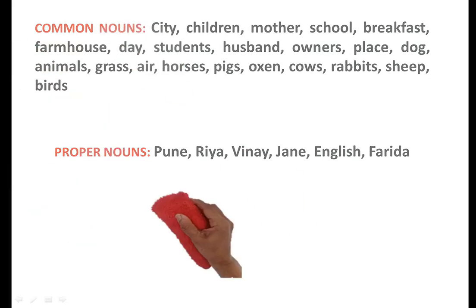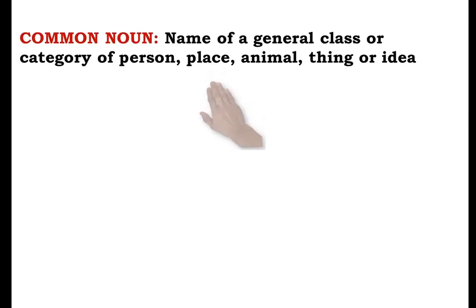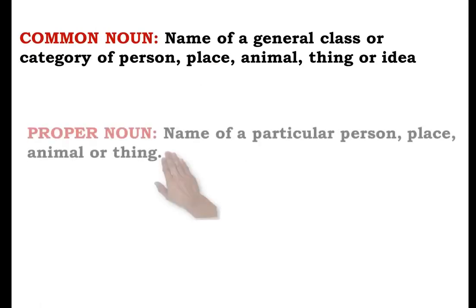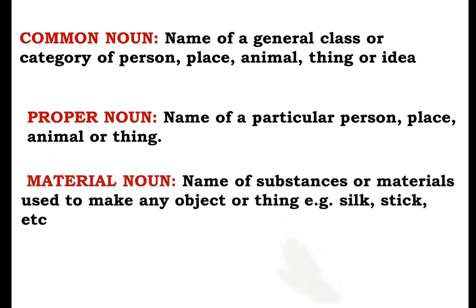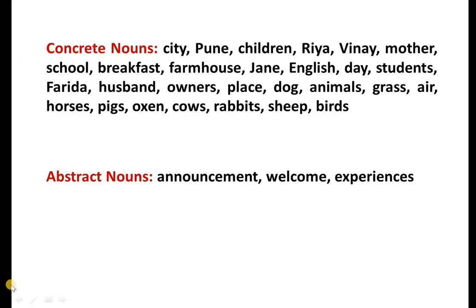Let us go on to define them. Common nouns are names of a general class or category of a person, place, animal, thing or idea. A proper noun is the name of a particular person, place, animal or thing. And we have material nouns, which are those things used to make some object — for example, silk, stick, bamboo, cotton, etc.